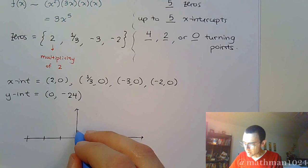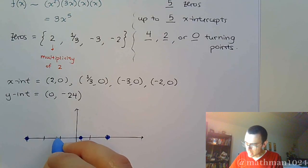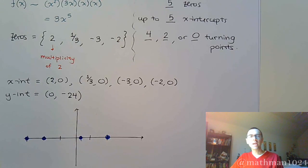We have 1/3, 0, so it's going to be somewhere right about there. Negative 3, 0 and negative 2, 0.